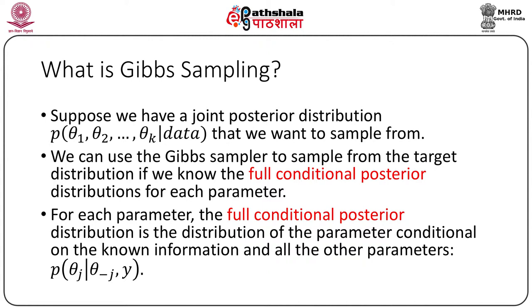In MCMC, we will talk about three major issues. The first one is Gibbs sampling, which we introduced a little bit before in the context of the Bayesian linear model setup. Then we will talk about the Metropolis-Hastings algorithm. And finally, we will talk about MCMC diagnostics. So let's start from MCMC.